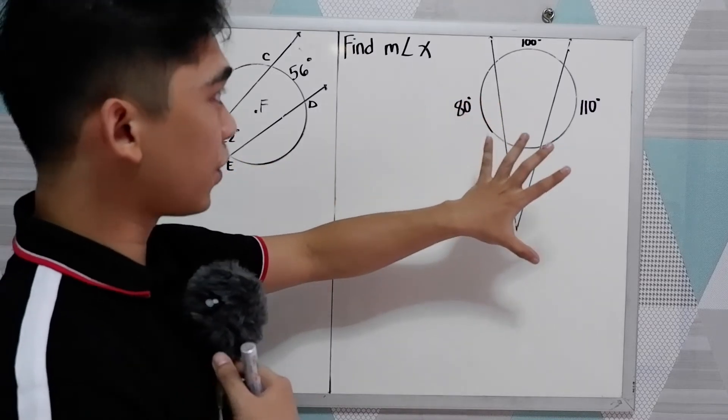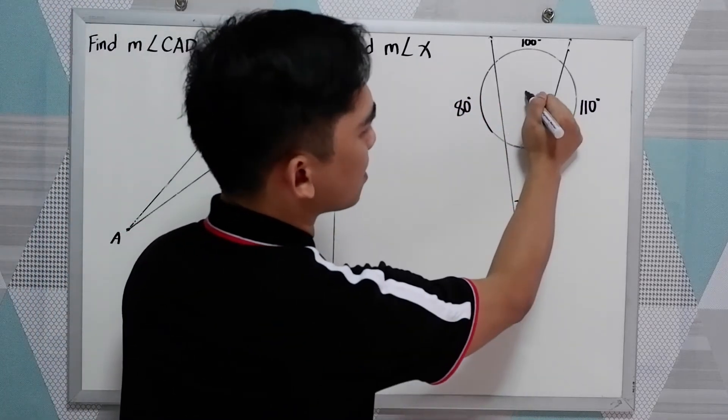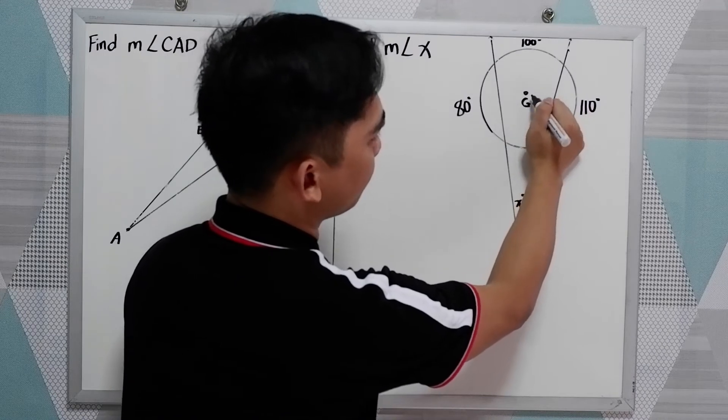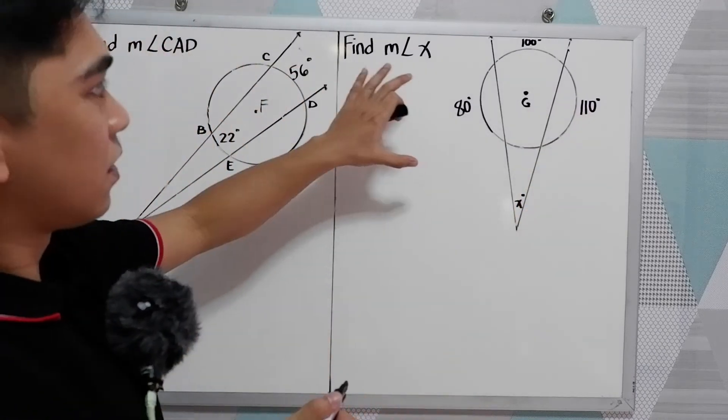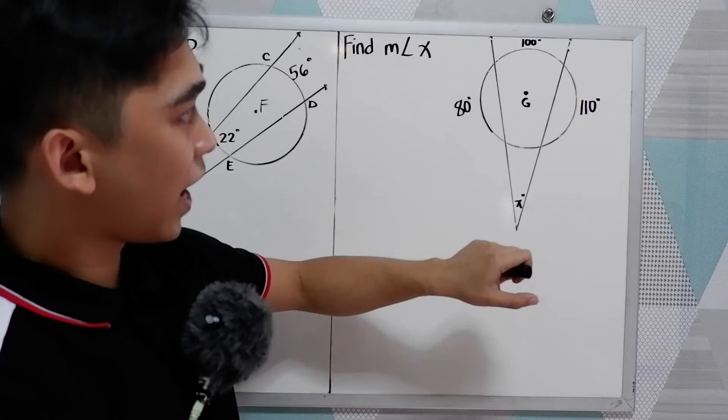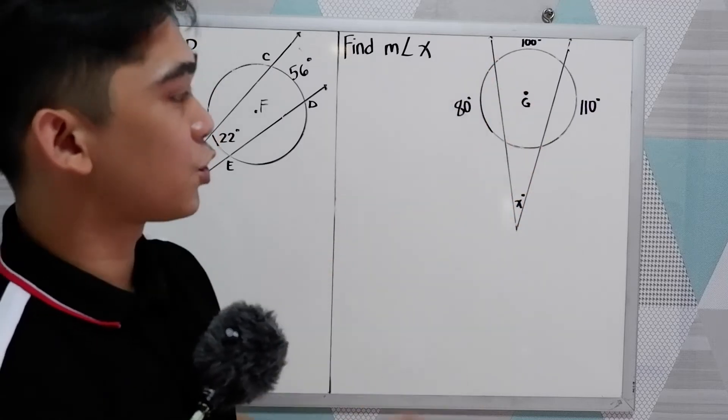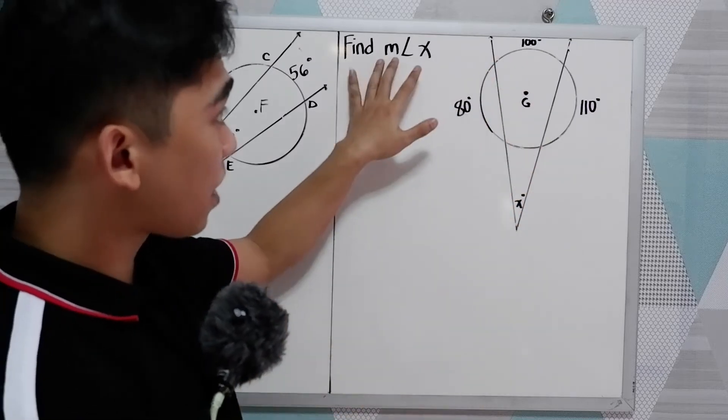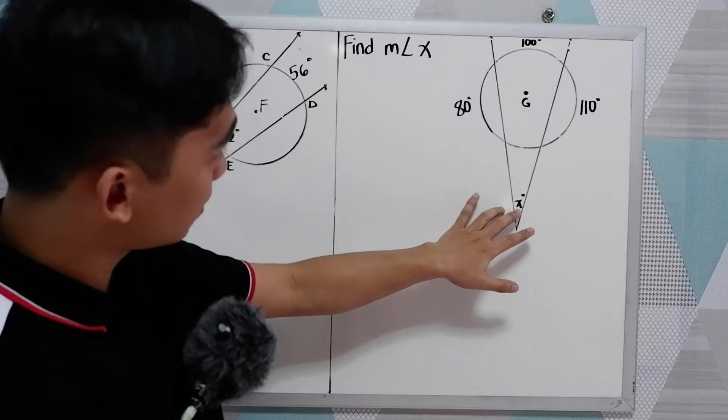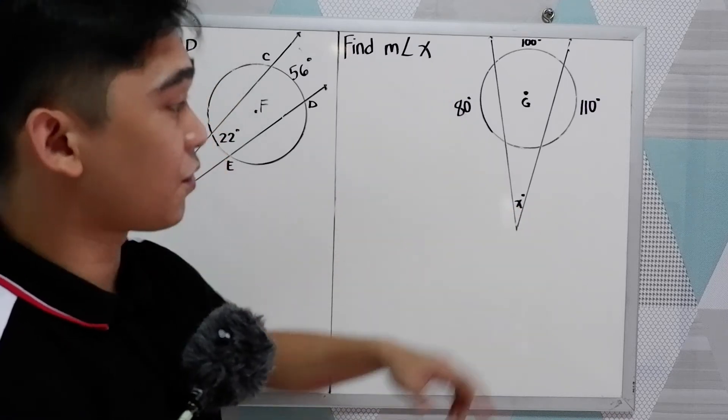And for the second illustration, let us name it circle G. We have circle G and the following measurements. We're going to find the measure of X, so X degrees.